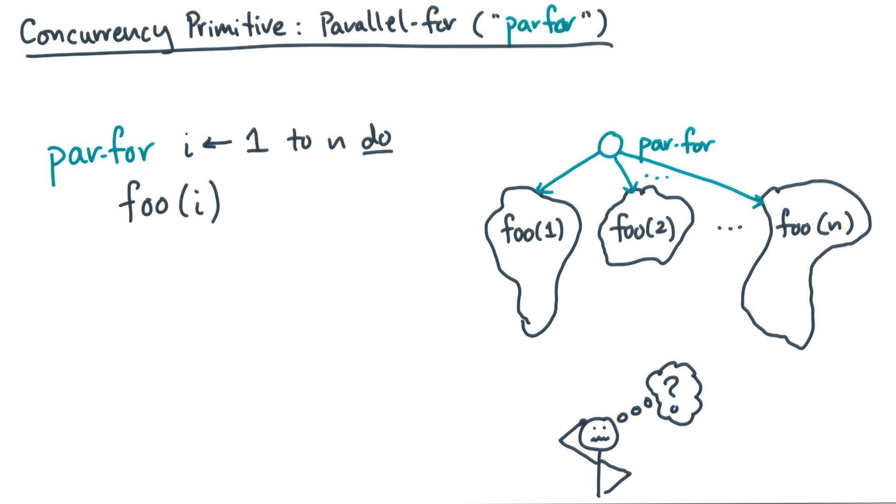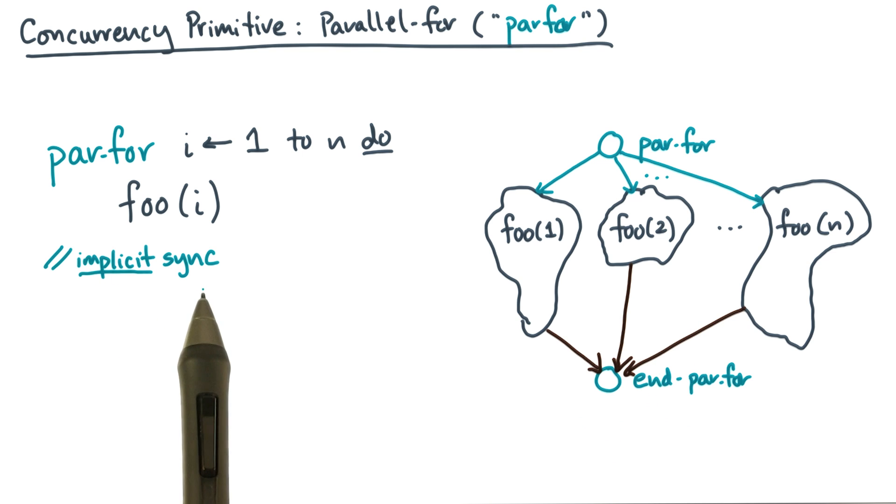Now by convention, the end of a par-for loop will include an implicit sync point. The implicit sync point will force all of these independent paths to join.